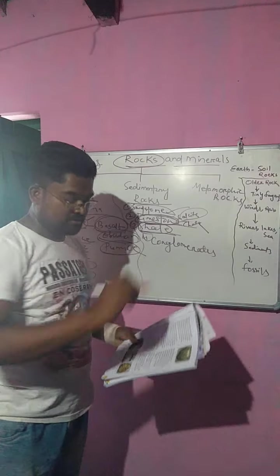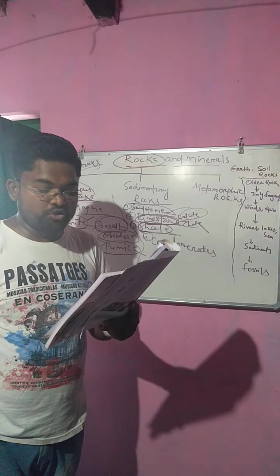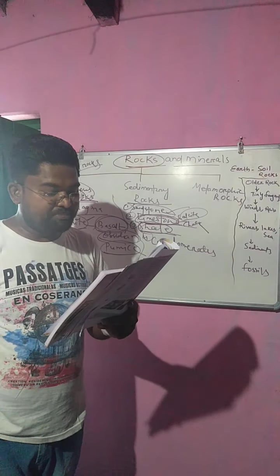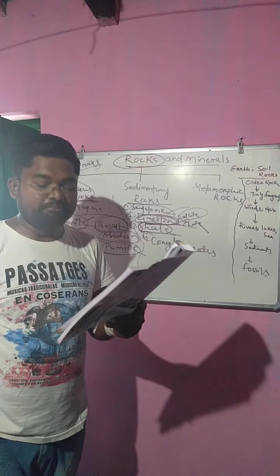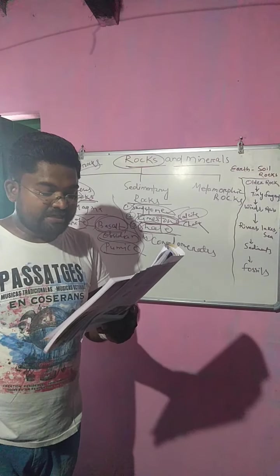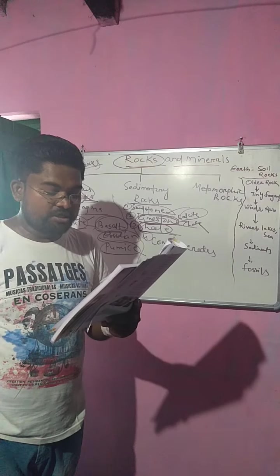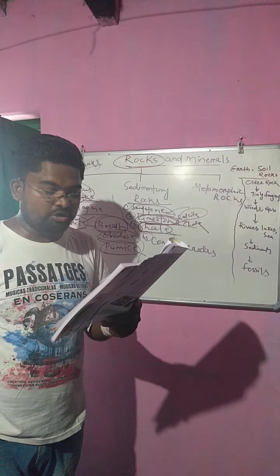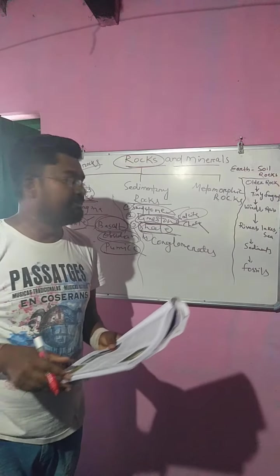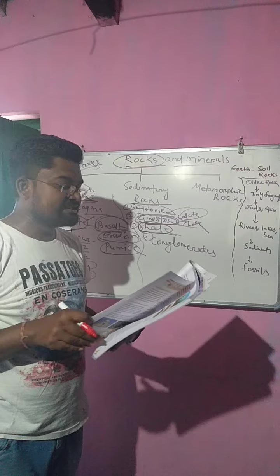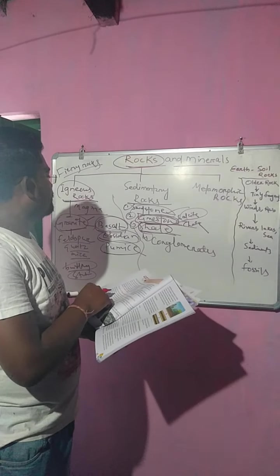Conglomerate looks like pebbles cemented together with minerals. They are formed when the lower layers of sediments consist of pebbles and sands. So this is all about sedimentary rocks.